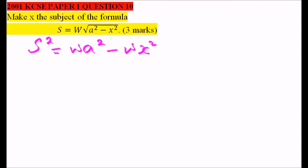That's the first expression we have. Let's take w x squared to the left-hand side and we have a squared to the right-hand side. So you have w x squared equals w a squared minus s squared.